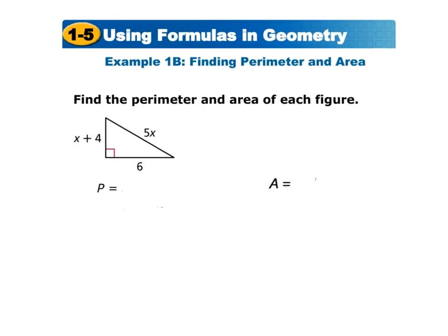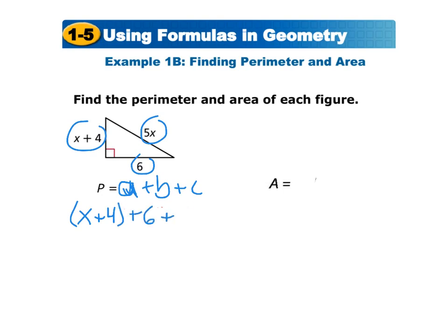Now let's find the perimeter and area of a triangle. The perimeter is A plus B plus C. Labeling the sides as A, B, and C, we have (x plus 4) plus 6 plus 5x. Adding these together and combining like terms gives us 6x plus 10 as the perimeter.